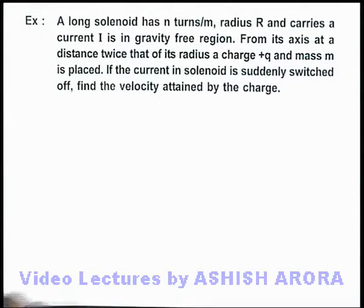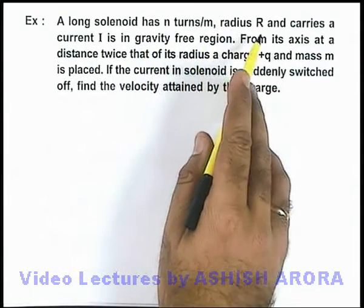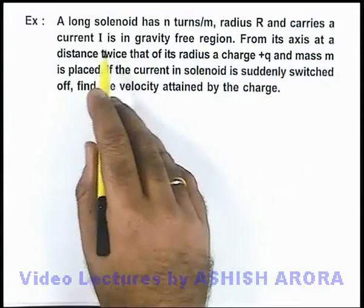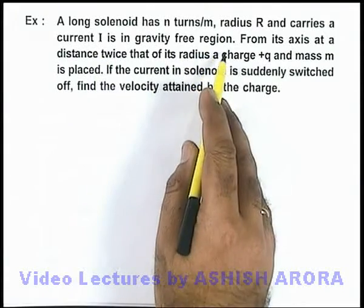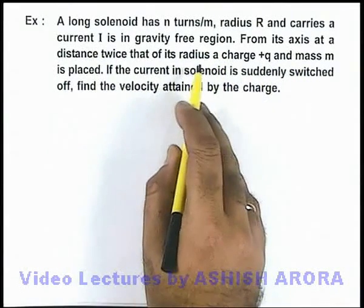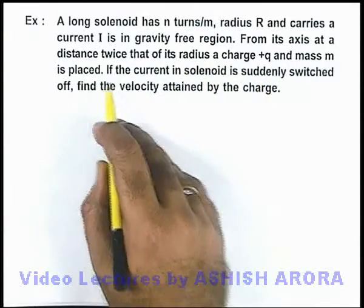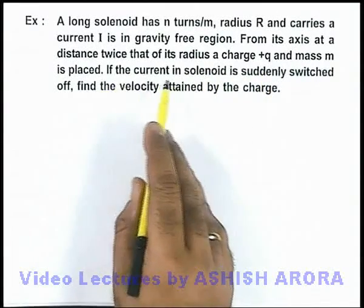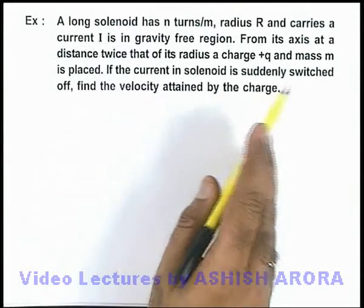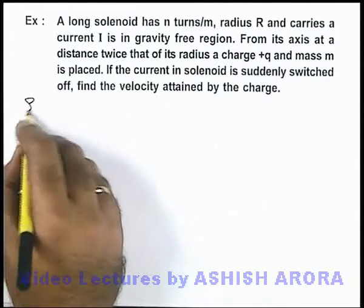In this example, we are given that a long solenoid has n turns per meter, radius R, and carries a current I in a gravity-free region. From its axis at a distance twice that of its radius, a charge +q and mass m is placed. If the current in the solenoid is suddenly switched off, we are required to find the velocity attained by the charge.